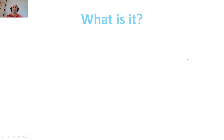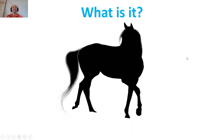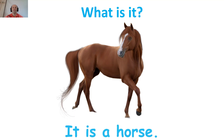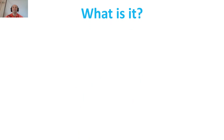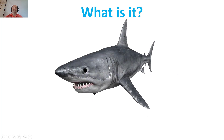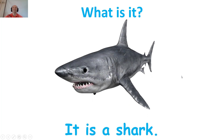And the last one. What about this? What animal is this? This is a horse. It is a horse. And I think we have one more. What about this animal? What is it? It is something that lives in the sea. It is a shark.